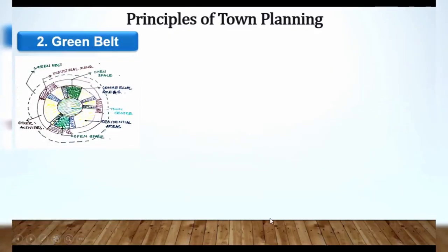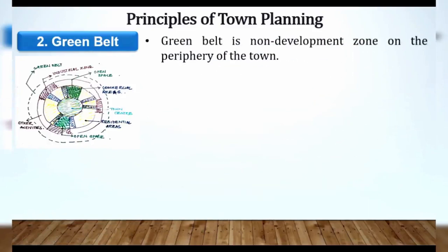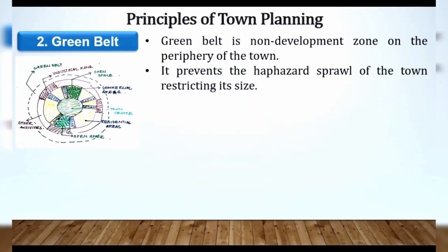Now, green belt. Green belt kya hai? It is a non-development zone on the periphery of the town. Yeh definition yaad rakhna hai. Green belt kya hai? Jahan par hum log kisi bhi cheez ka development nahi kar sakte. Non-development, as the name says, is the non-development zone — jahan par development nahi ho sakti. Na wahan par residential area aa sakta hai, na commercial, na industrial area. Aur yeh kahan par hota hai? Periphery of the town par hum log provide karte hain.